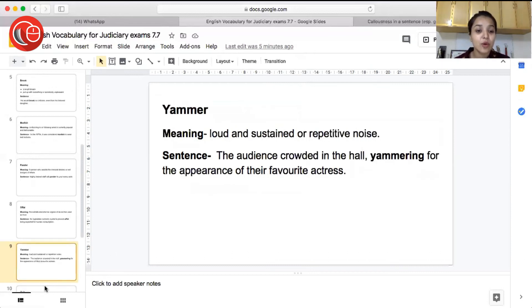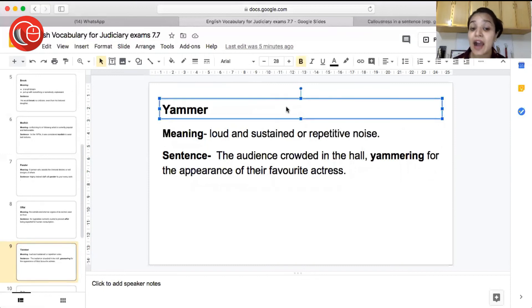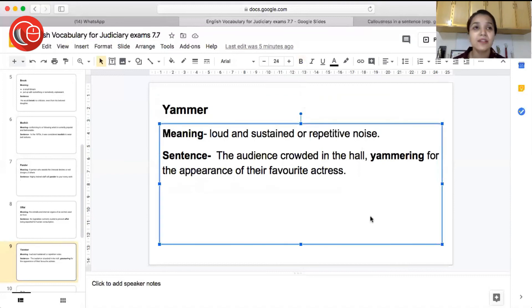The next word is yammer, meaning loud and sustained or repetitive noise. So a sound which is very loud, repetitive and ear hurting, and you cannot bear with it. It's so loud. That is called yammer. Sentence: The audience crowded in the hall, yammering for the appearance of their favorite actress. So the hall was full of audience and all the people were just yelling, shouting in repetitive voices that they want to see their favorite actress.